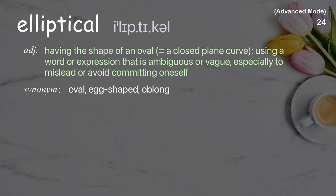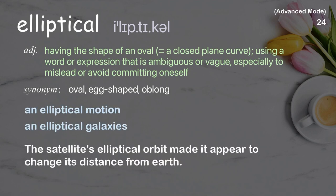Elliptical: having the shape of an oval; also, using a word or expression that is ambiguous or vague, especially to mislead or avoid committing oneself. Examples: an elliptical motion; elliptical galaxies. The satellite's elliptical orbit made it appear to change its distance from Earth.